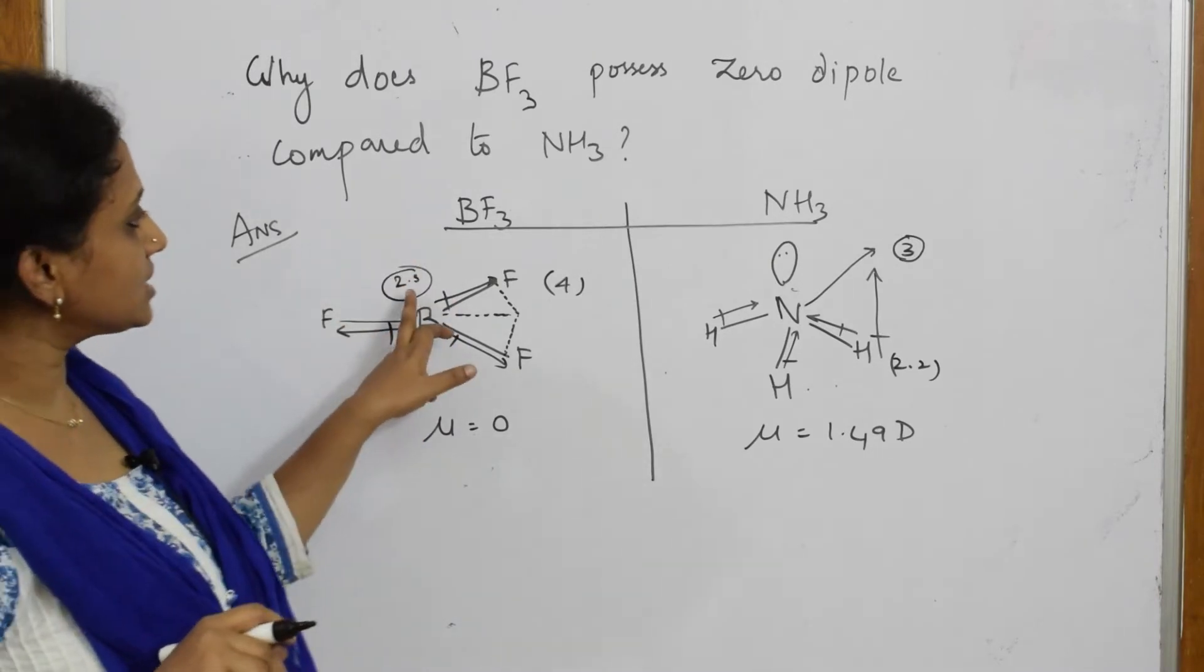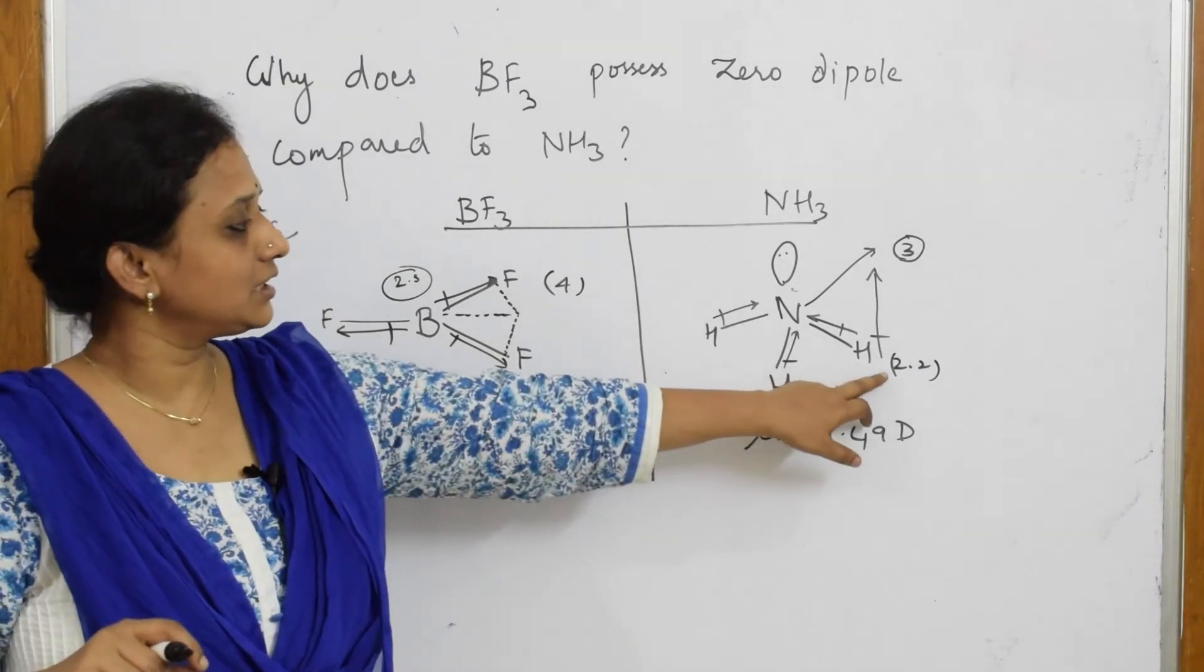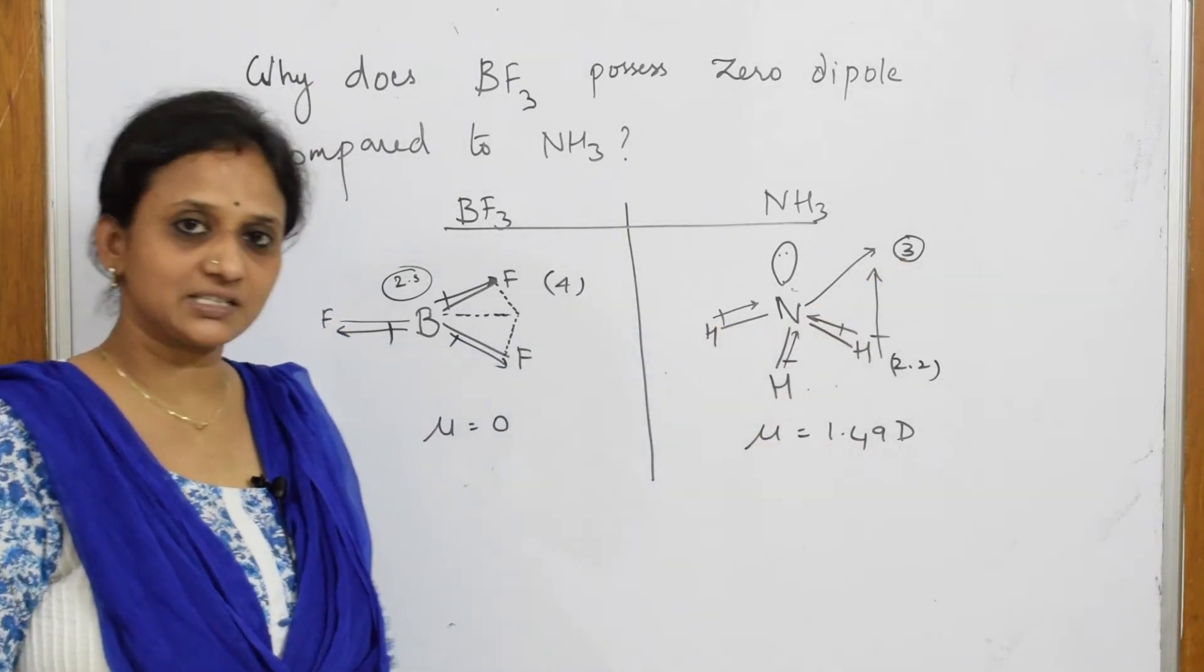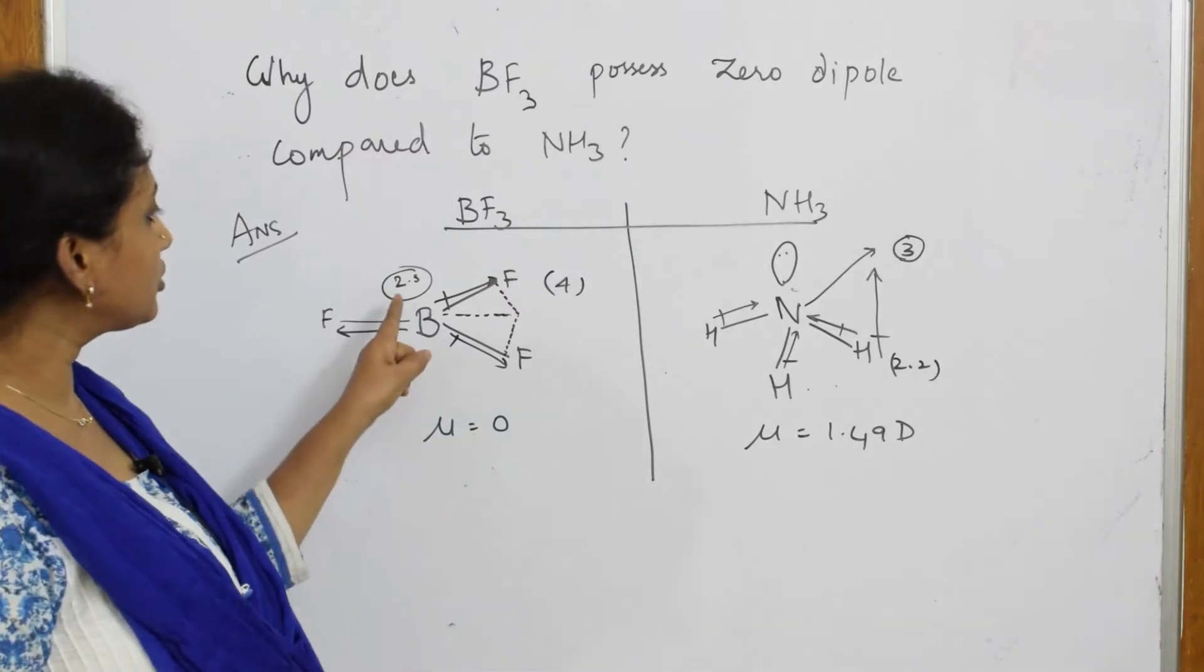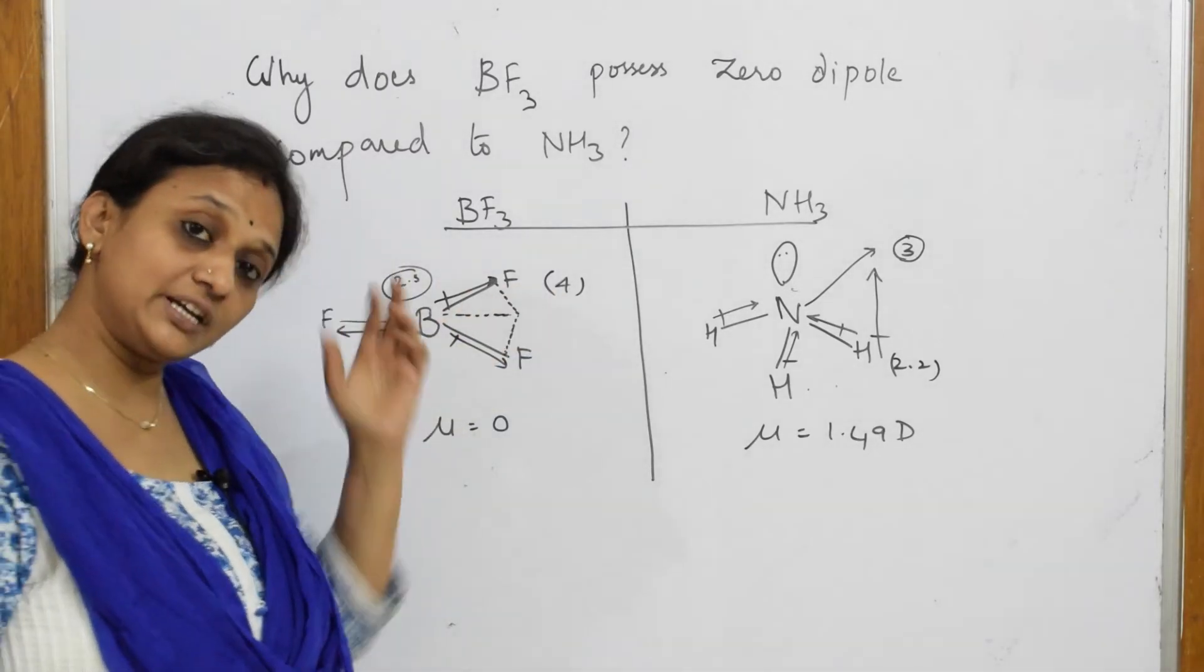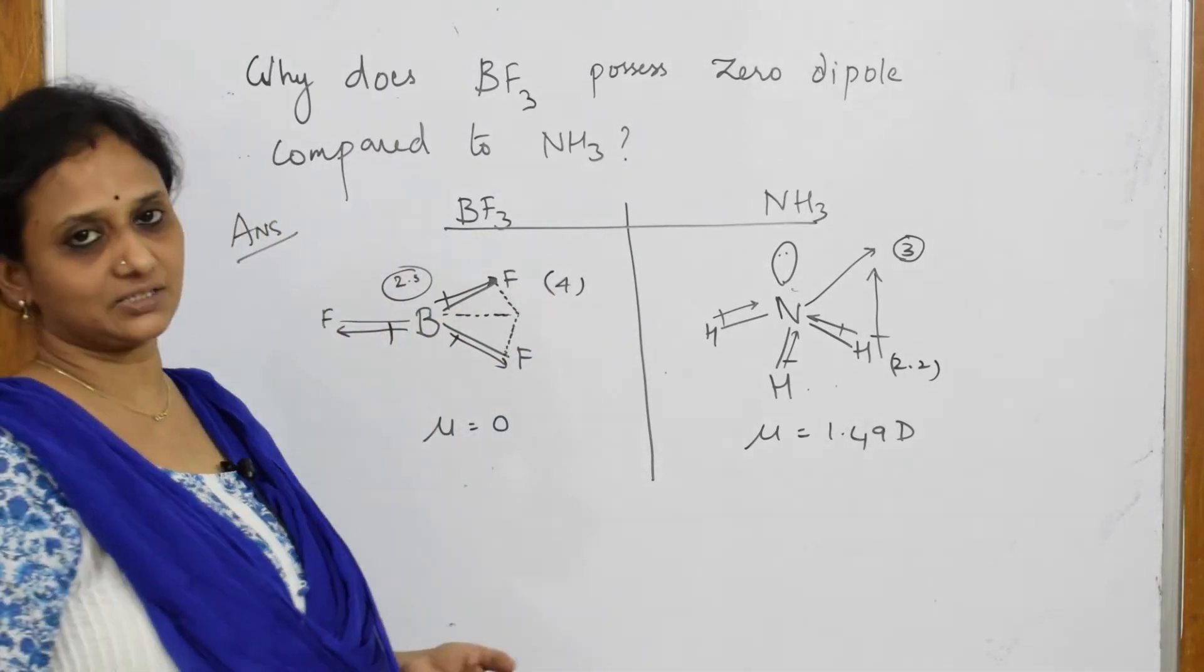Now though there is, now look here, here the electronegativity difference is very less, but then too it has dipole. Here, the electronegativity difference is more, but then too it has zero dipole, that is what they are trying to ask you.